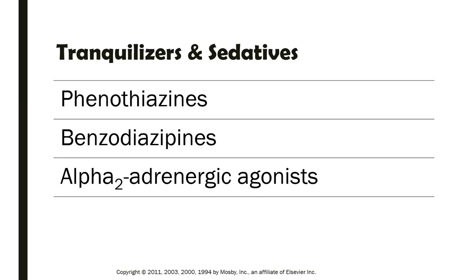As a recap, there are three groups of drugs that are used as tranquilizers and sedatives: the phenothiazines, the benzodiazepines, and the alpha-2 adrenergic agonists, or the alpha agonists.